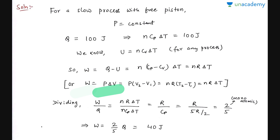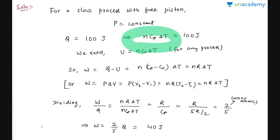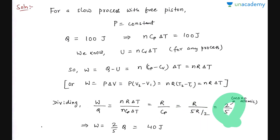Alternatively, W = PV₂ − PV₁ = nRT₂ − nRT₁ = nRΔT. So W/Q = nRΔT / nCpΔT = R/Cp. This was a monatomic gas, so Cp = 5R/2. Therefore W/Q = R/(5R/2) = 2/5. Since Q = 100 J, work done W = (2/5) × 100 = 40 joules.